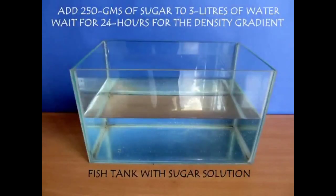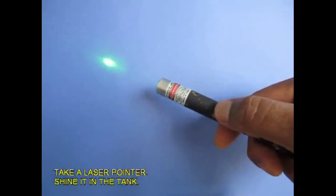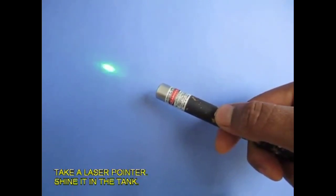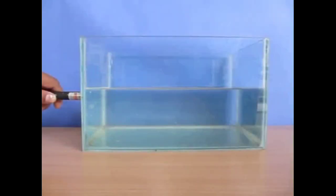As this happens, there would be a density gradient. The water at the lower level of the fish tank would be slightly denser.